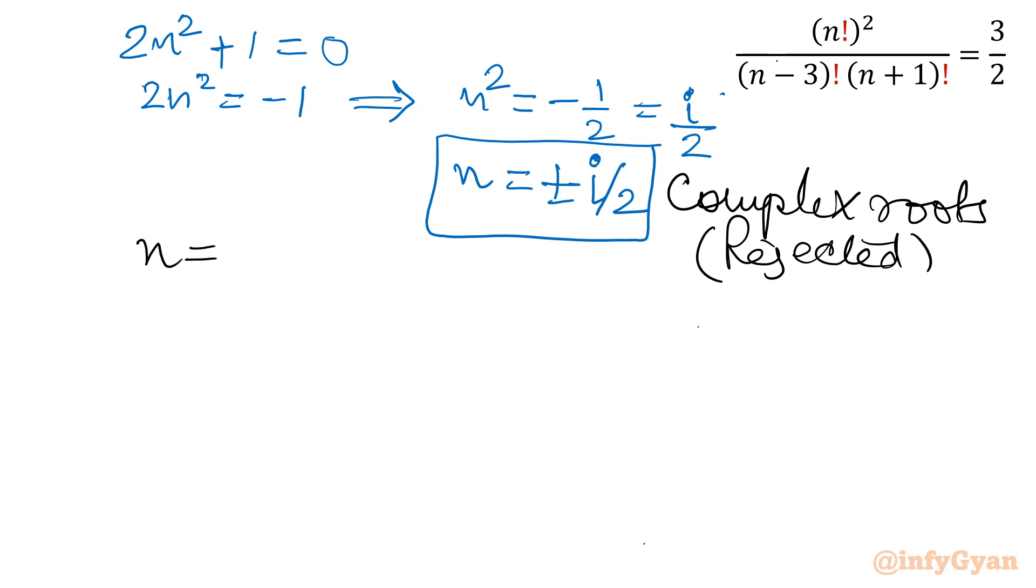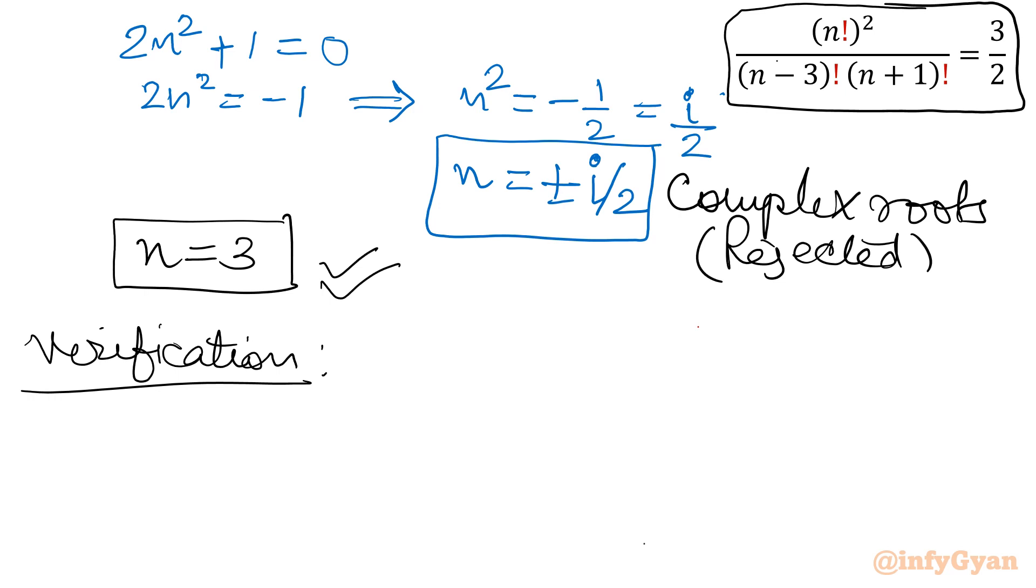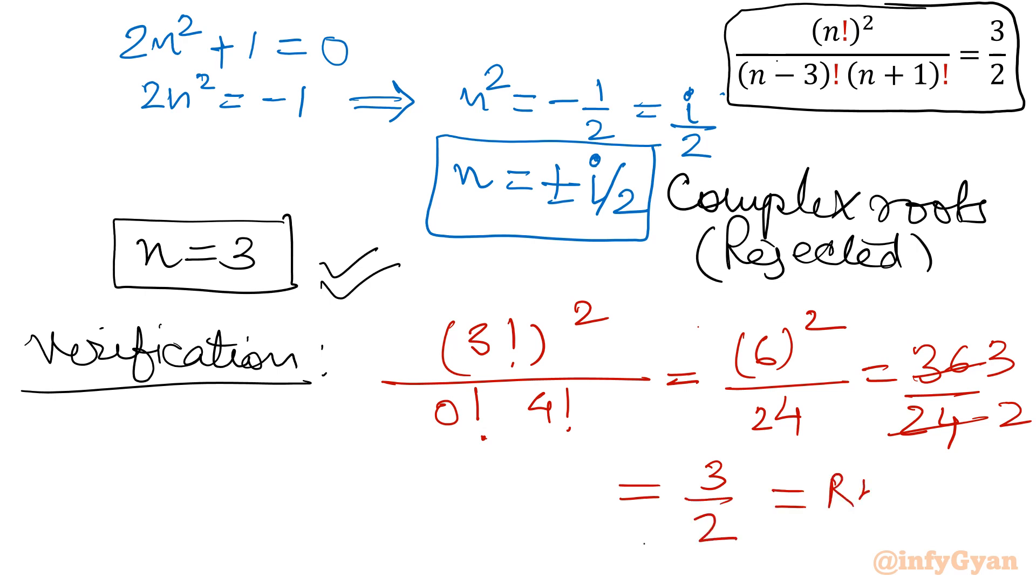Now n equal to 3 is our ultimate solution. Let us verify. Whether it is satisfying the equation or not. So I will put values here in this equation. 3 factorial whole square over 3 minus 3, so 0 factorial, 3 plus 1, so 4 factorial. 3 factorial means 6. It is 6 square. 4 factorial means 24, 4 into 3 into 2 into 1. So that will be 12 into 2, so 24. 36 over 24 equal to, if I will cancel by 12, so it will give us 3 by 2. Which is our right hand side. Hence verified, n equal to 3 is our final solution.